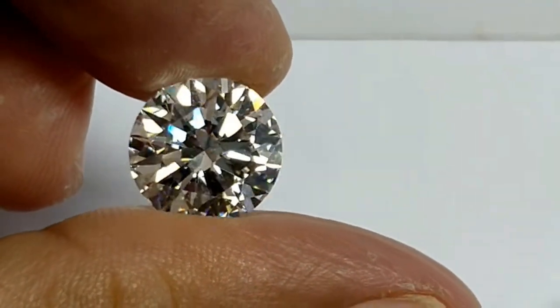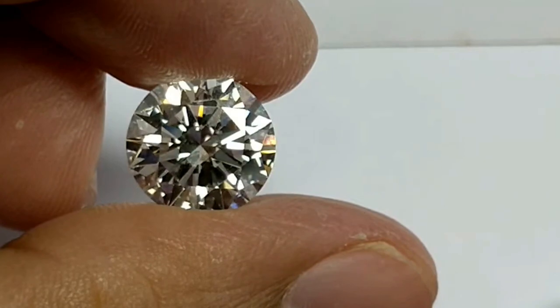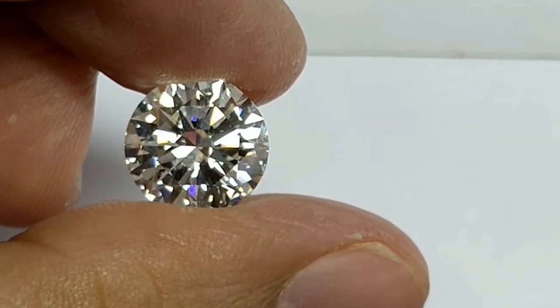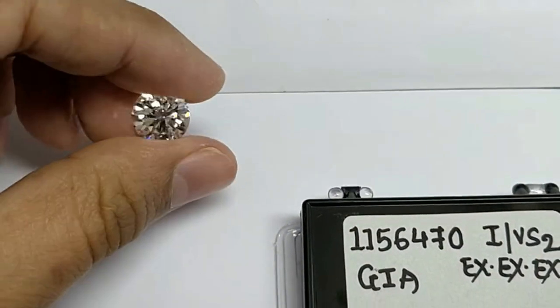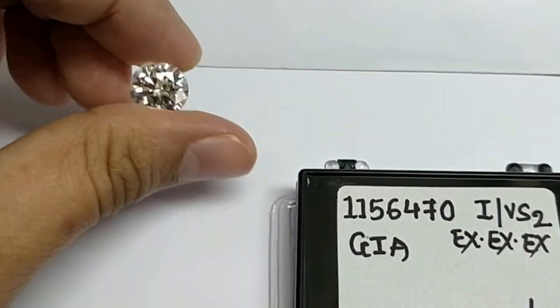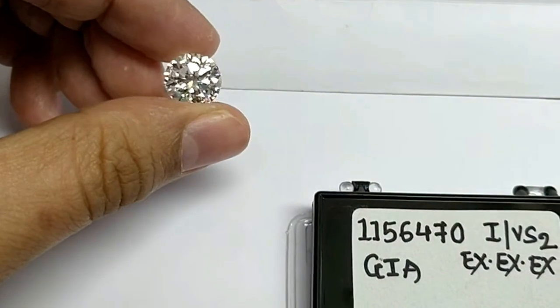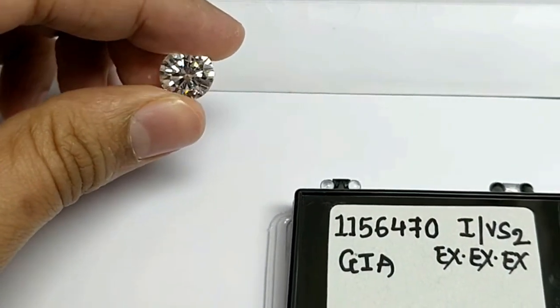So this is a quick brief explaining VS clarity, I color, and 5 carat diamonds in one short video. This should give you some idea if you're planning to buy a VS clarity of any size or an I color in any size.